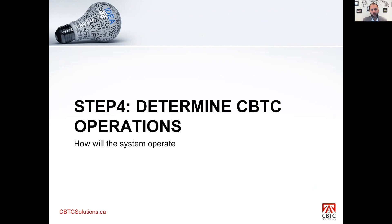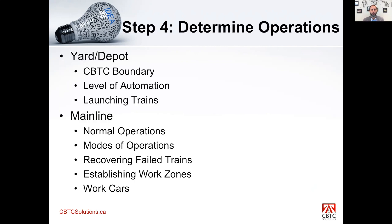Step four. So now what we've done so far is we've looked at the system from an individual user's perspective, looked at their priorities and concerns, and defined system capabilities. We're going to raise the discussion a little bit higher now and look at it from a higher system level view, which is the operations — how is the system operating, or how does the transit authority want the system to operate? I broke this up into two broad categories: the yard and depot, and the mainline operations.